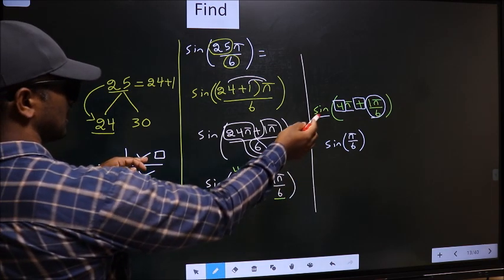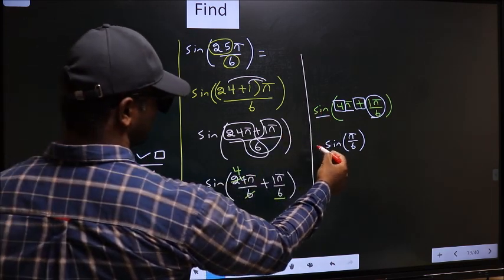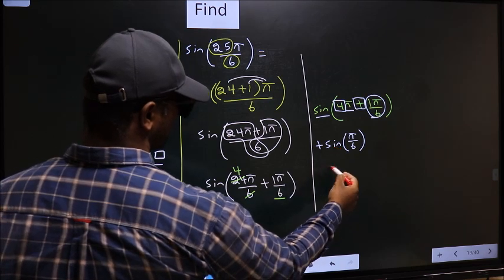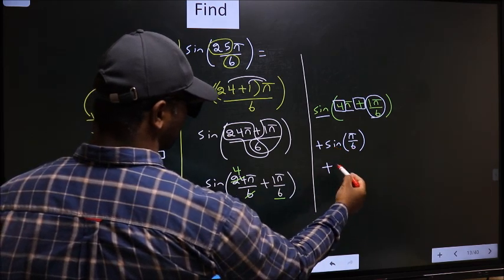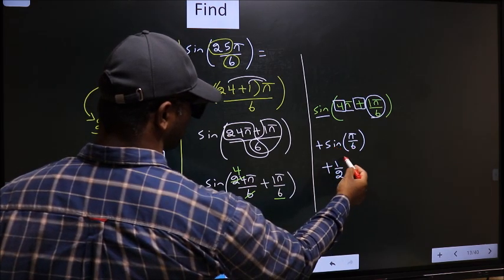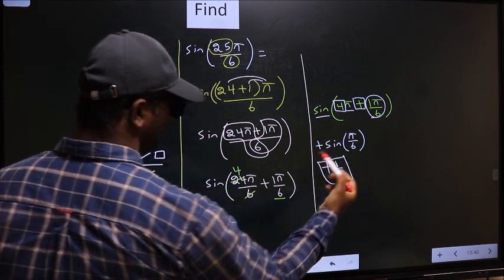So in the first quadrant, sine is plus. So you put plus. So plus sine π by 6 is 1 by 2. So this is our answer.